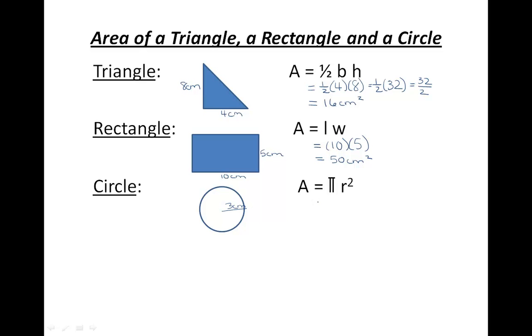Area equals 3.14 times 3 squared, which equals 3.14 times 9. If you multiply these numbers together, 3.14 times 9, your final answer will be 28.26 centimeters squared.